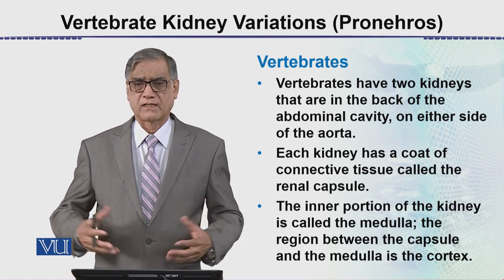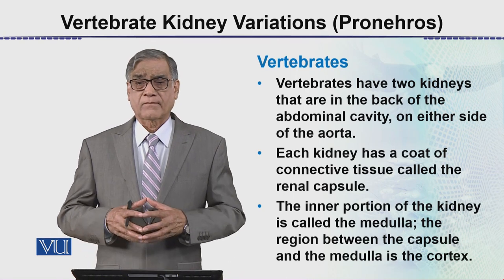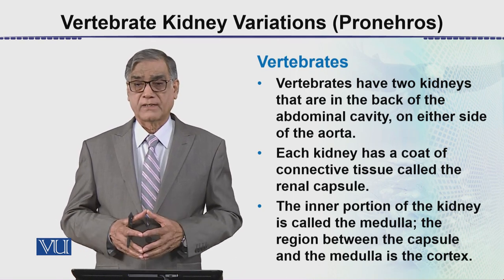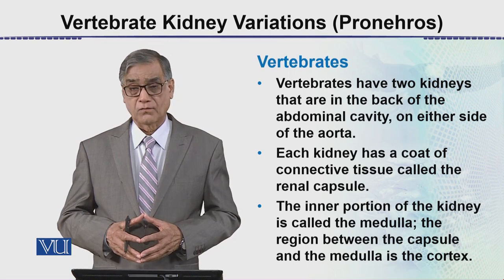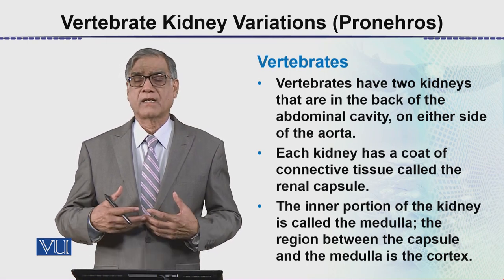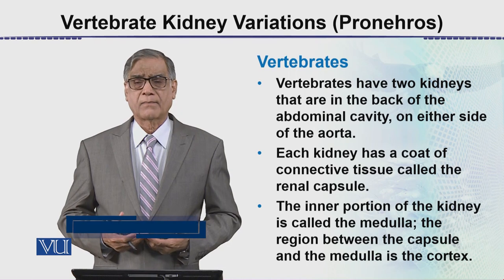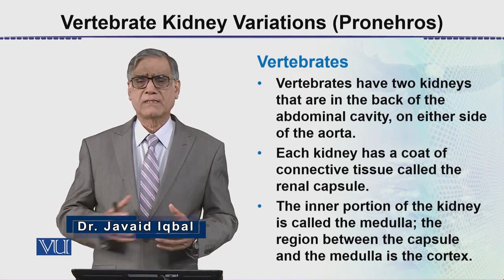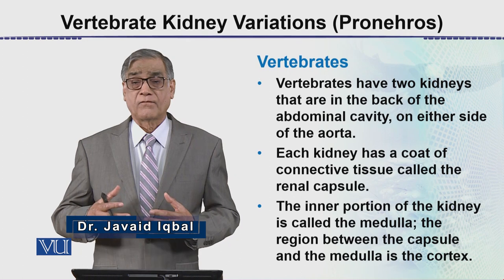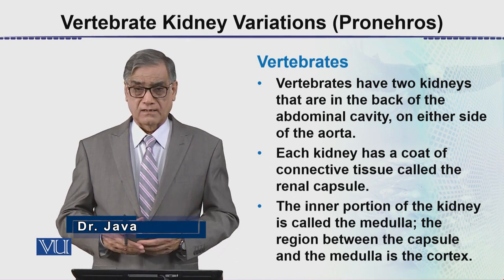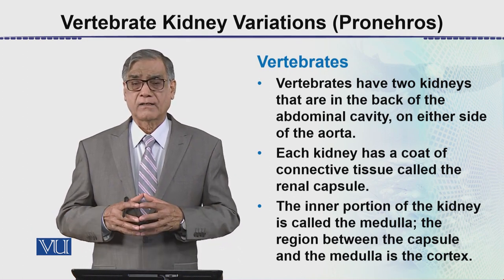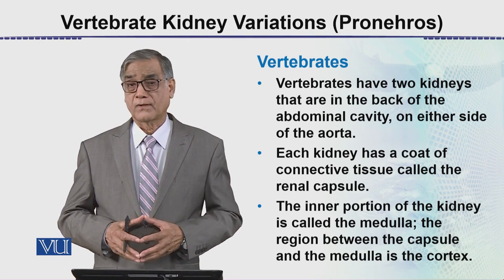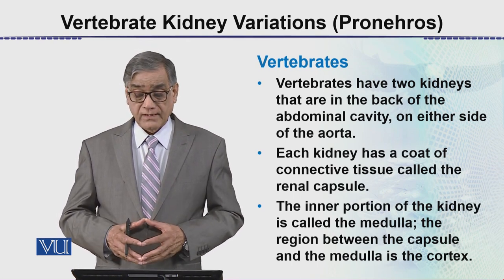It is logical that we can see that the pro-nephros are found in very primitive vertebrates — such as hagfishes and their relatives, or at maximum, in the larvae of amphibians. These are very simple types of kidneys which we call the pro-nephros.